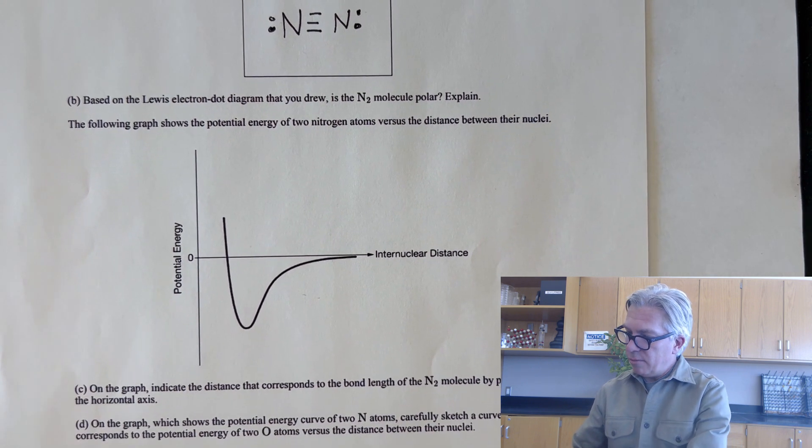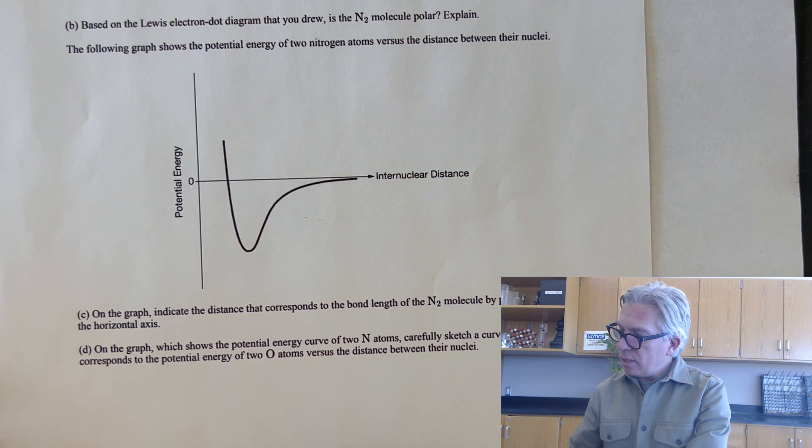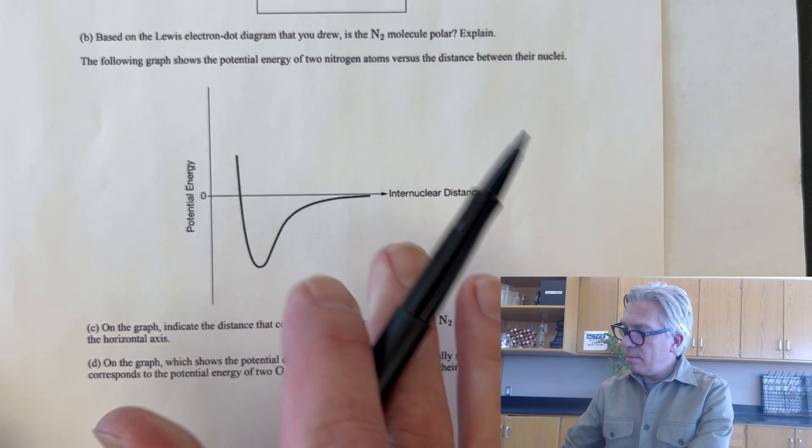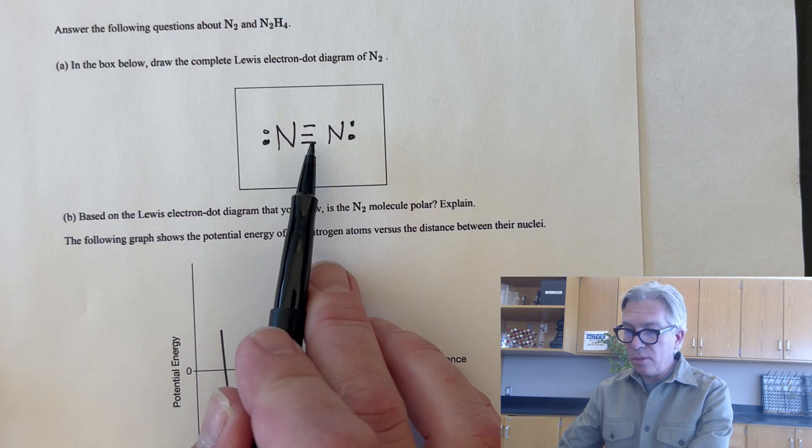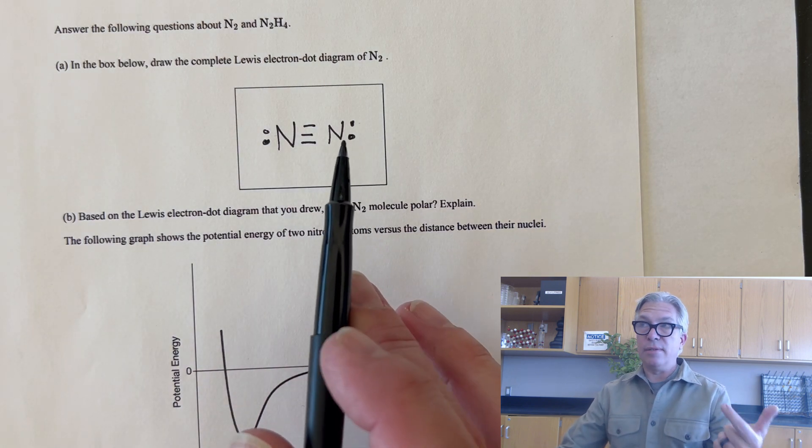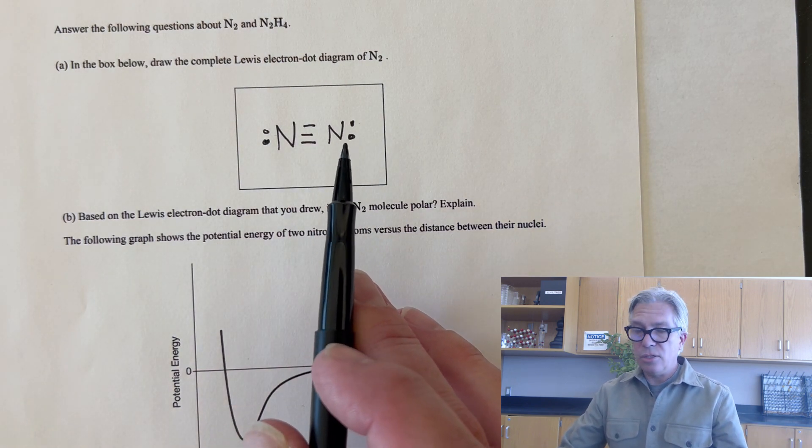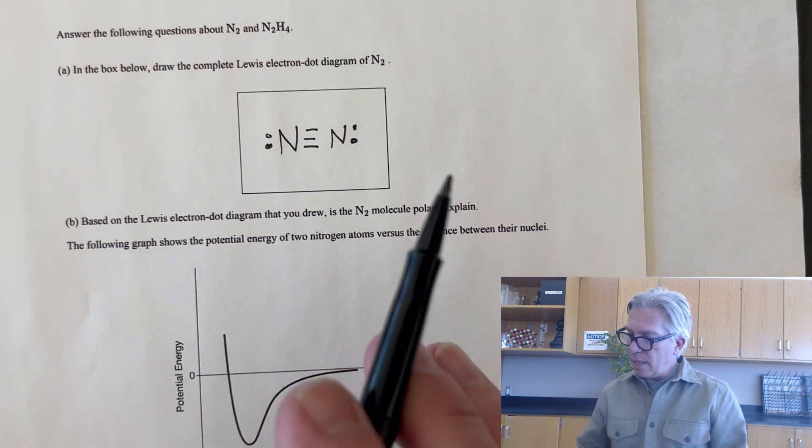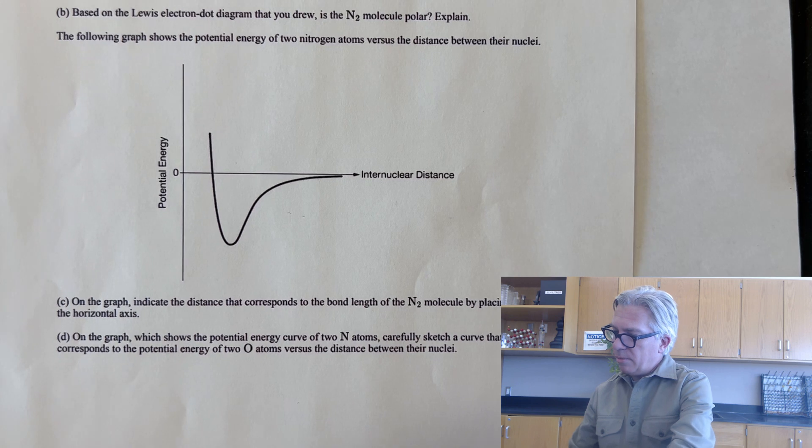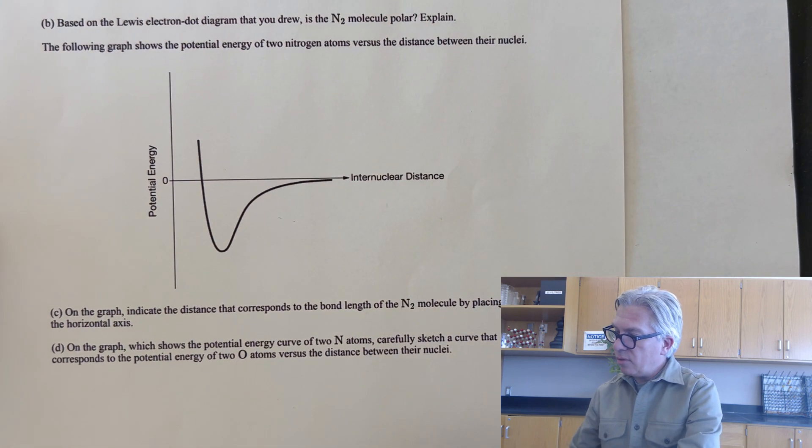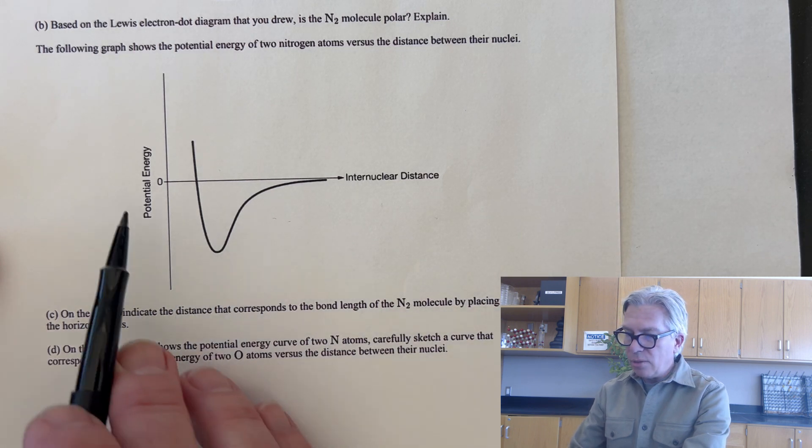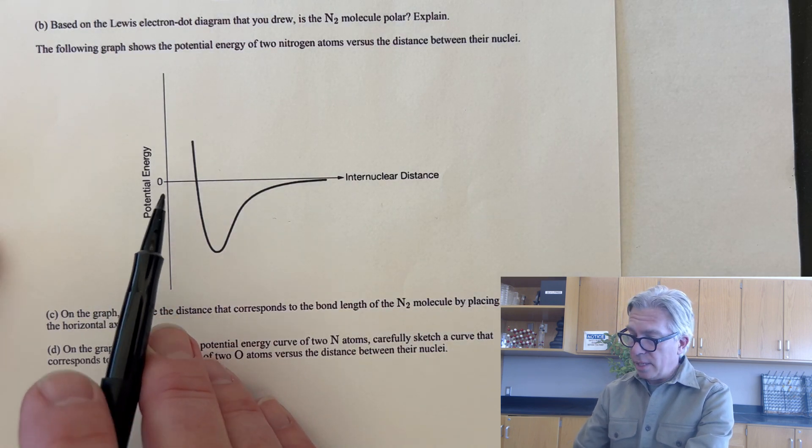Based on the Lewis electron dot diagram that you drew, is the nitrogen molecule polar? Well, the nitrogen molecule is not polar because both ends are the same. We're forming bonds between two atoms that have the same electronegativity and so nonpolar. Now let's look at the potential energy diagram. This shows potential energy of the two nitrogen atoms versus the distance between their nuclei. This is a very general diagram. We've got zero there, but that's the only number on this whole thing.